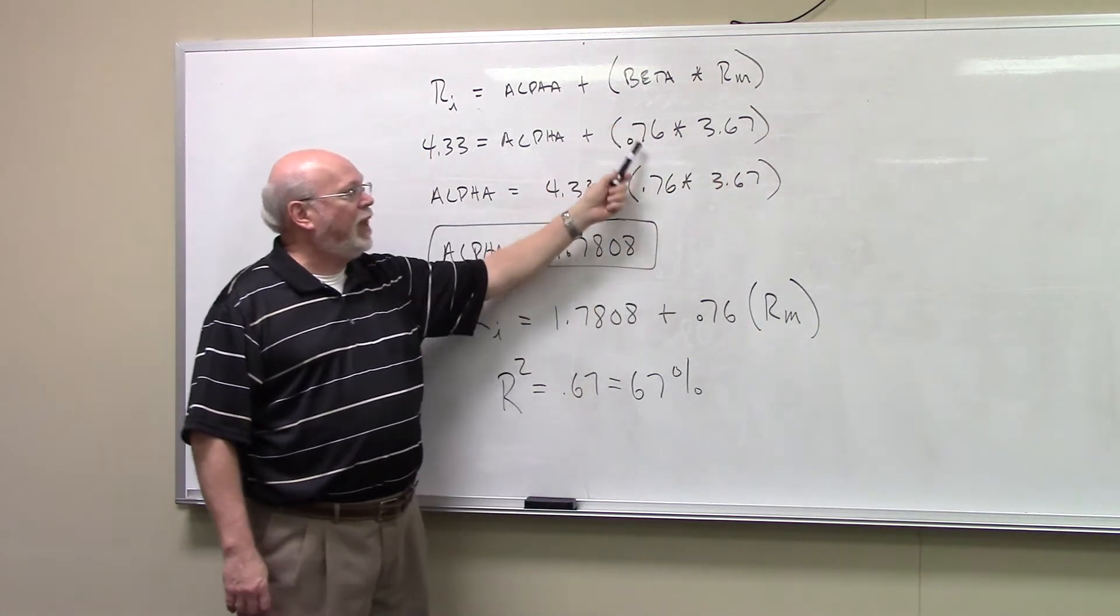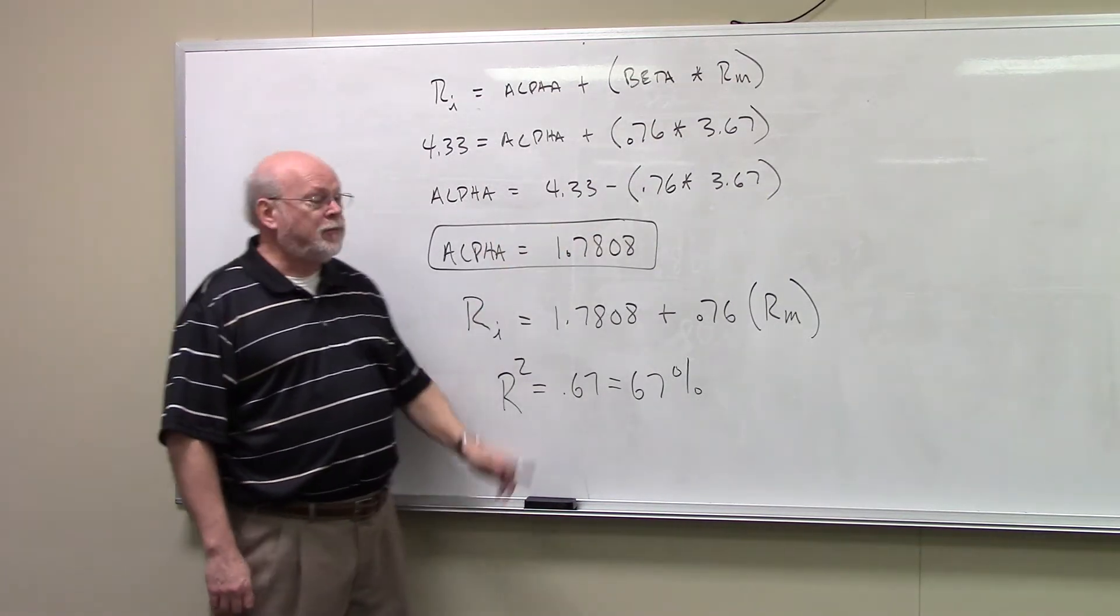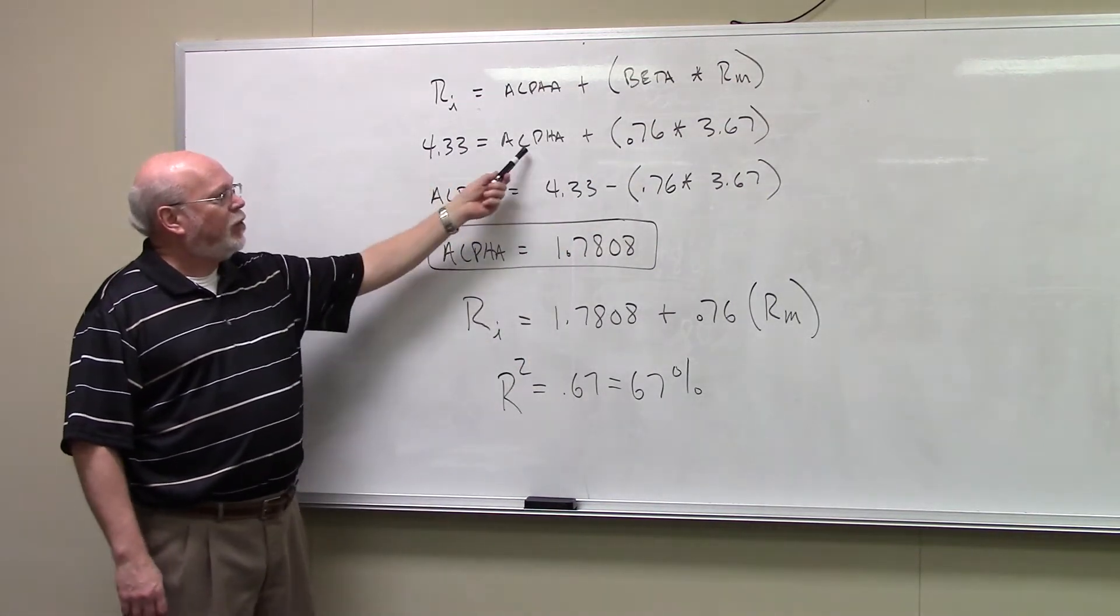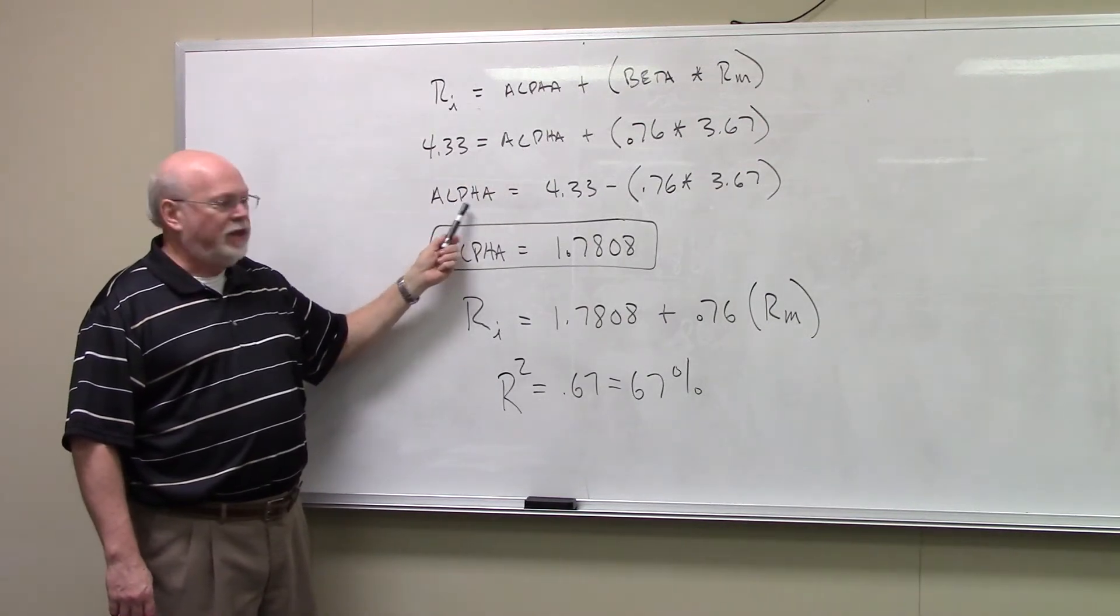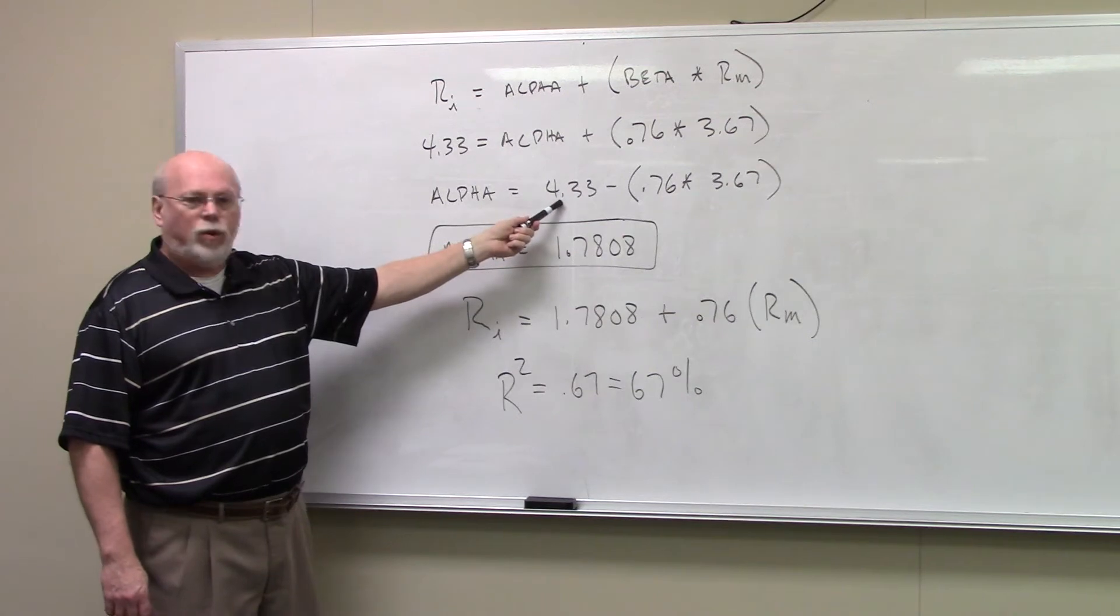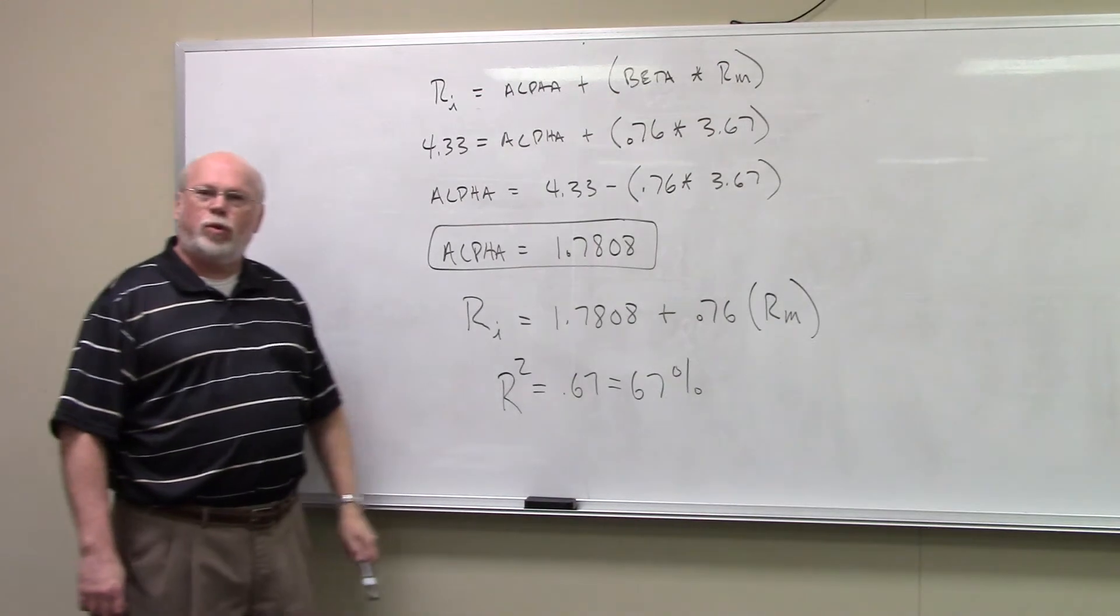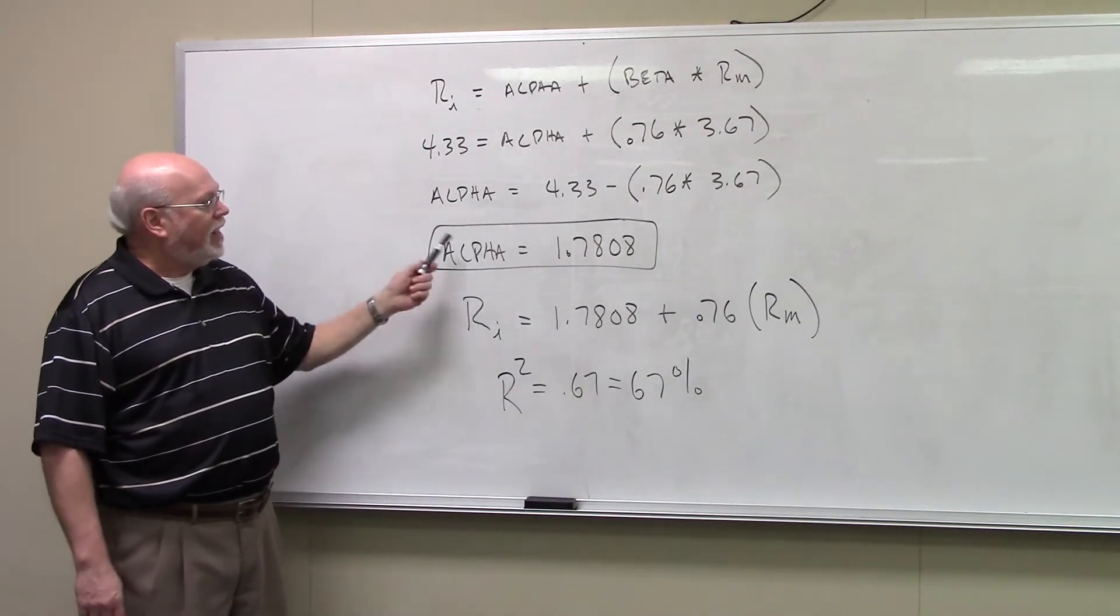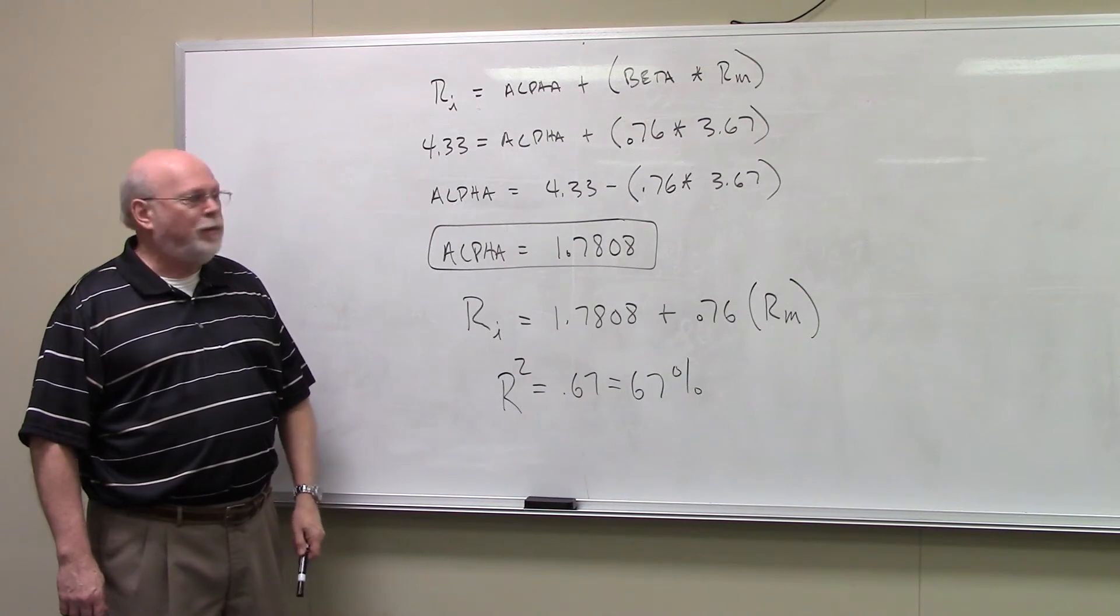And we know the beta statistic between the security and the market. That's .76. So filling that in now, we know everything but alpha. And if you solve for alpha, that turns out to be 4.33 minus .76 times 3.67. And that's going to give us an alpha of 1.708 positive.